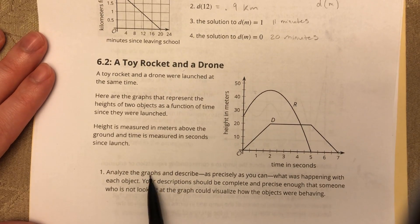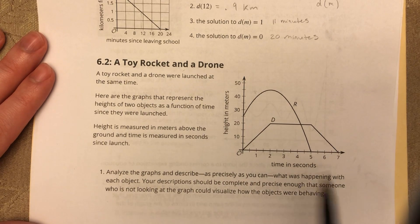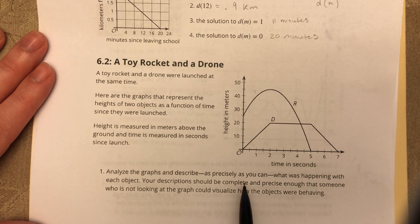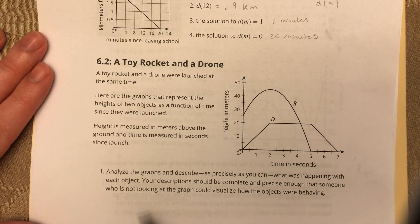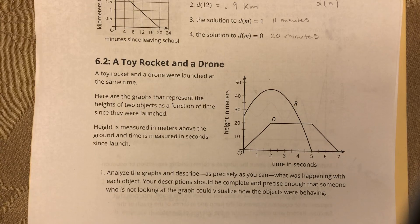One: Analyze the graphs and describe as precisely as you can what was happening with each object. Your description should be complete and precise enough that someone who is not looking at the graph could visualize how the objects were behaving.